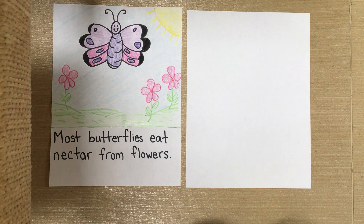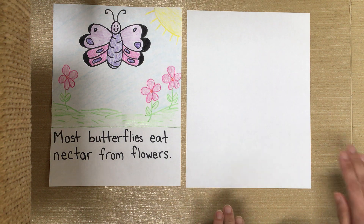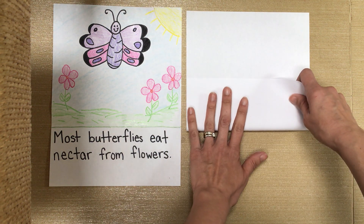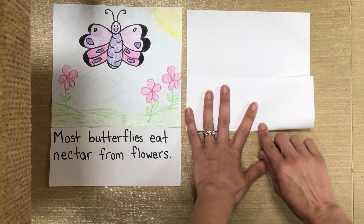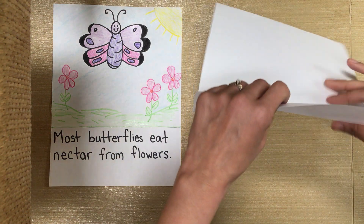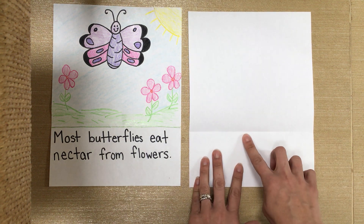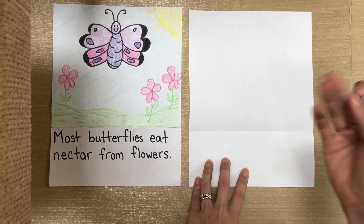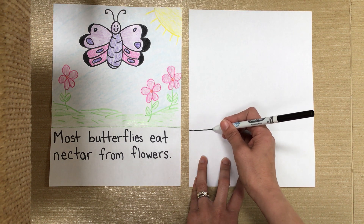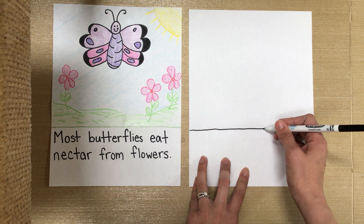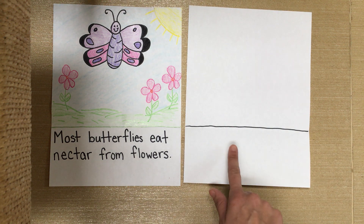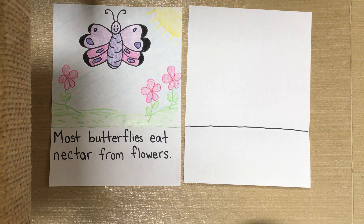Now that everybody's ready to go, we're going to get started with drawing our butterfly. The first thing I want you to do is take your paper and fold it up just about like that, so that it's folded up that much. And then you're going to take it and unfold it. This is going to give us a nice spot to write, just like we do when we're doing our writing in class. Once you have your paper like this and you've made your fold, go ahead and draw a line all the way across it. Down here is where we're going to write, and up here is where we're going to draw our picture.